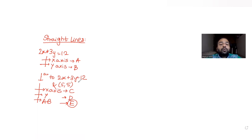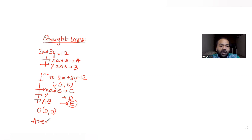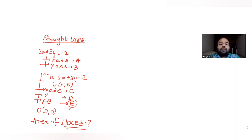So E is the intersection point of the two lines which are perpendicular to each other. O is the origin of the coordinate axis, so O is (0, 0), and we have been asked to find the area of quadrilateral OCEB that has formed. We need to find the area of this entire quadrilateral.